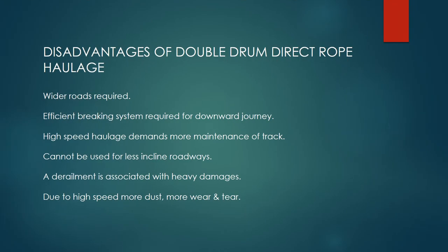Disadvantages of Double Drum Direct Rope Haulage: wider roads are required; an efficient braking system is required for the downward journey; high speed haulage demands more maintenance of track; it cannot be used for less inclined roadways; a derailment is associated with heavy damages; and due to high speed, there is more dust and more wear and tear.